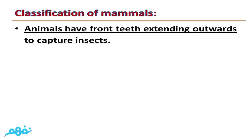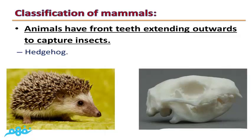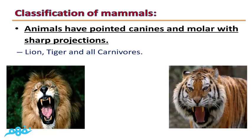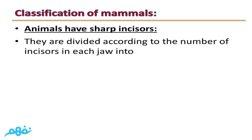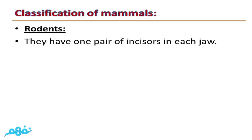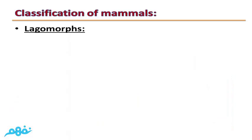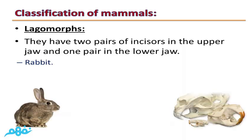Animals with front teeth extending outwards to capture insects include the hedgehog. Animals with pointed canines and molars with sharp projections include lion, tiger, and other carnivorous animals. Animals with sharp incisors are divided, according to the number of incisors in each jaw, into rodents and lagomorphs. Rodents have one pair of incisors in each jaw, such as rat, jerboa, and squirrel. Lagomorphs have two pairs of incisors in the upper jaw and one pair in the lower jaw, such as rabbit.